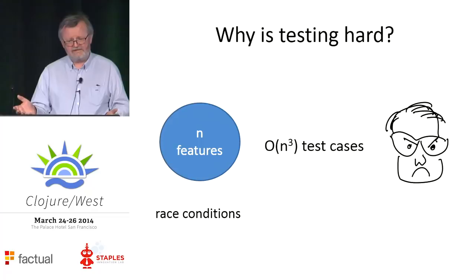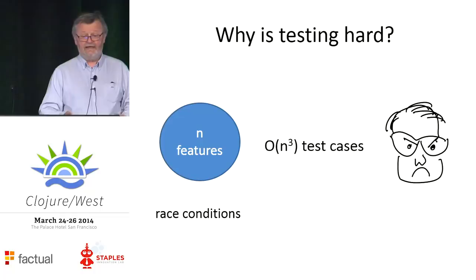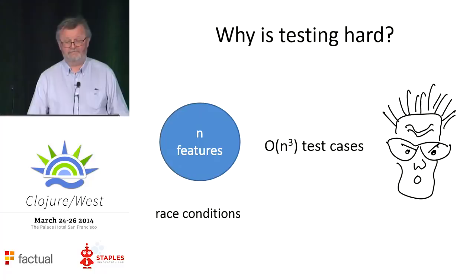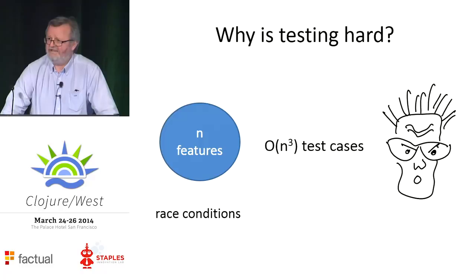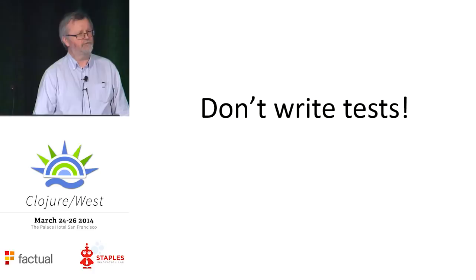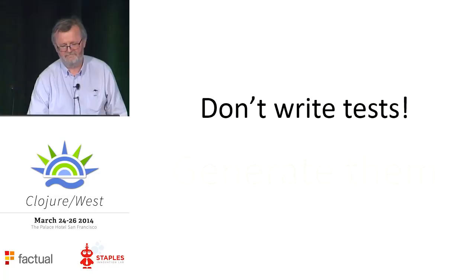If you want to test for all of those possibilities, you've got to write a quadratic number of test cases. And some bugs don't appear just when you use two things together — sometimes you need to use three things together, requiring a cubic number of test cases. And what about race conditions? They're the worst of the lot because by definition a race condition involves an interaction between at least two features, and it doesn't even strike every time you run the same test. So this is why testing is hard. You can't test everything. You can't test enough. The answer? Don't write tests — generate them.